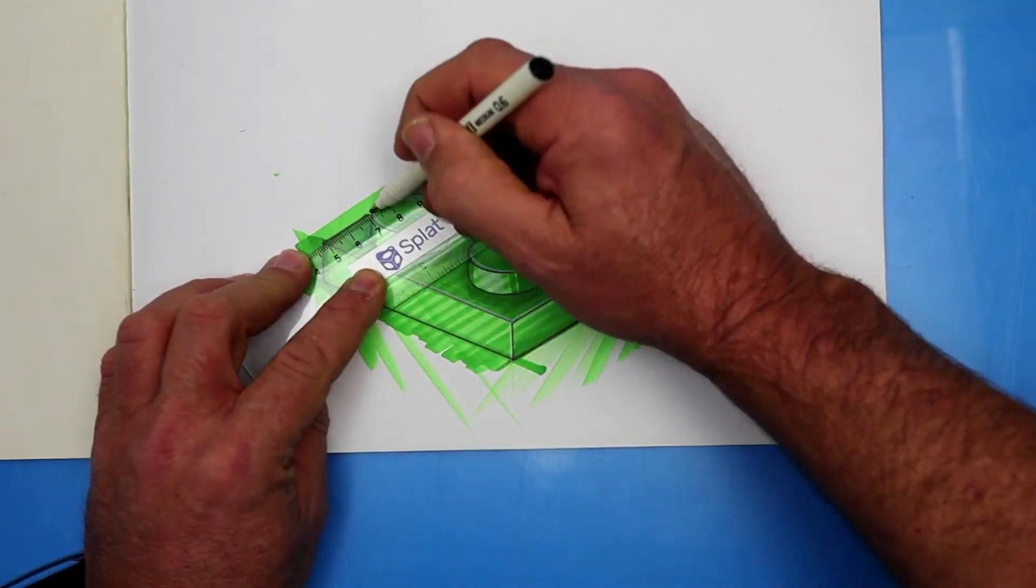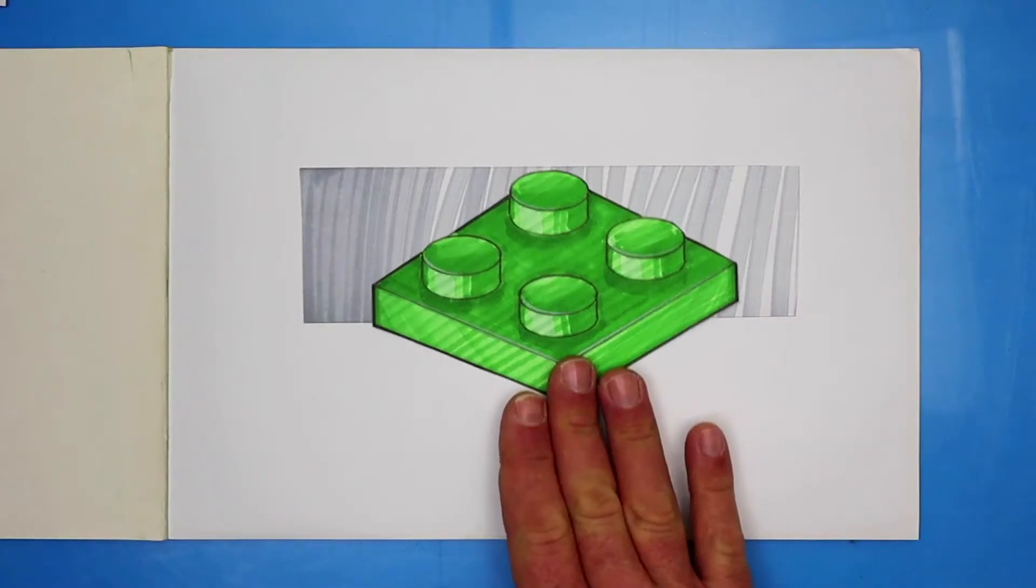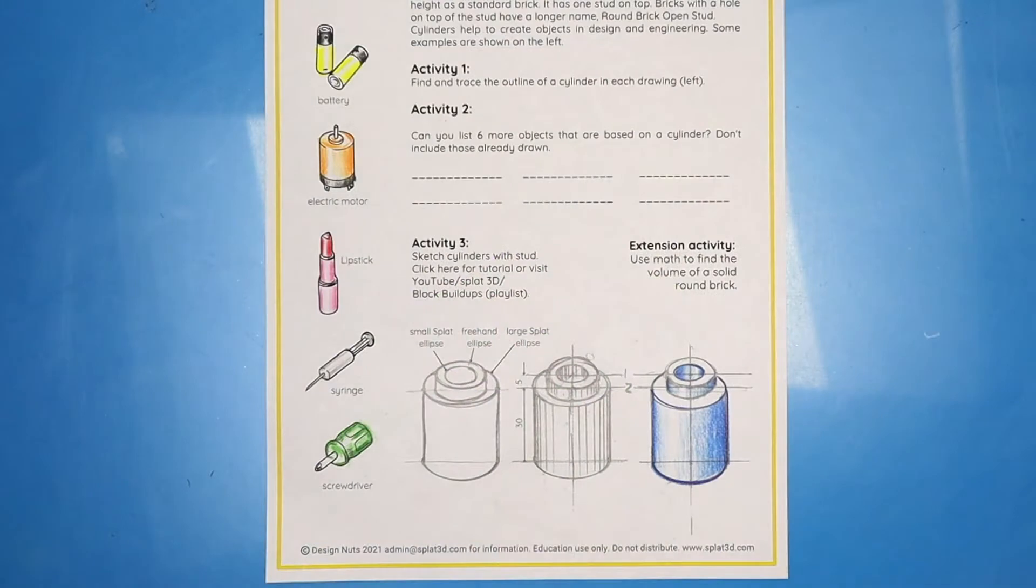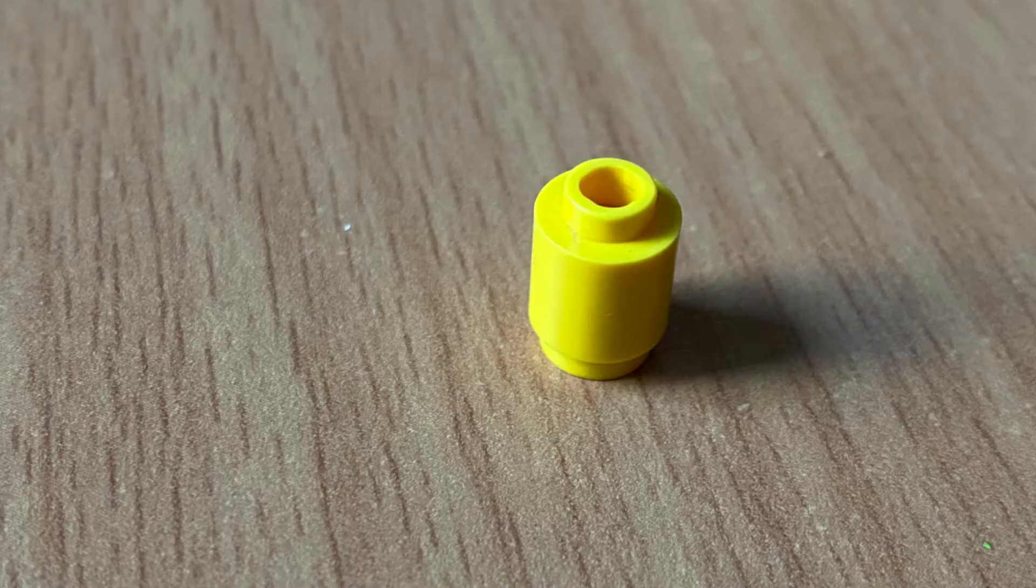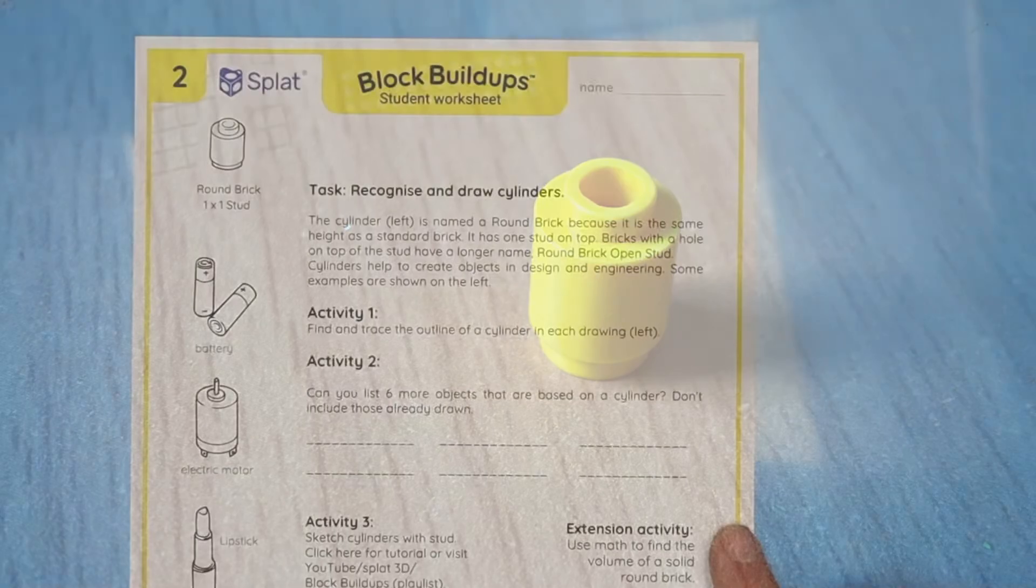Quick look back at lesson 1 where we drew a rectangular prism. Today we're practicing drawing a cylinder. A round brick is a cylinder and on top is an even smaller cylinder called a stud. The stud is what allows it to click and build onto other bricks.